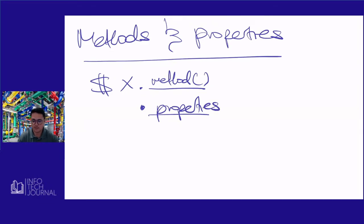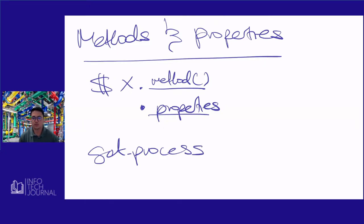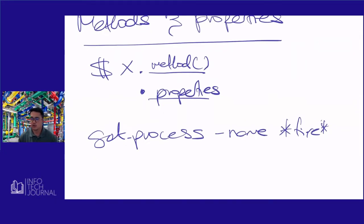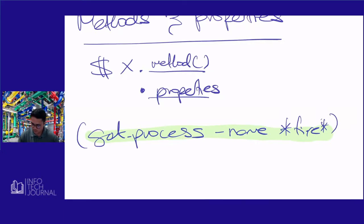If you were to just have a raw string or a command, let's say we are using GetProcess for a name process — we've been using Firefox so far. In order to gain access to the properties or methods, we have to encase the whole command with its own brackets, then use the dot operator. That's how to access methods and properties when using it directly for a commandlet.